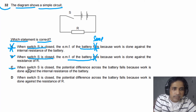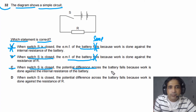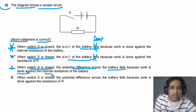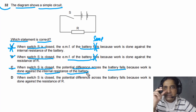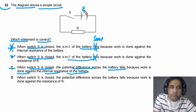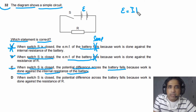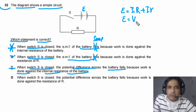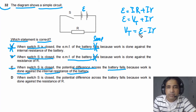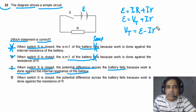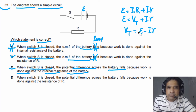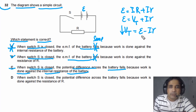Statement C says when the switch is closed, the potential difference across the battery falls because work is done against the internal resistance of the battery — this statement is correct. Let's understand why: EMF E = I×R + I×r. The terminal potential difference equals EMF minus I×r. When there is no current (switch open), the I×r term is zero and terminal PD equals EMF. When current flows, work is done against internal resistance, so terminal PD decreases.